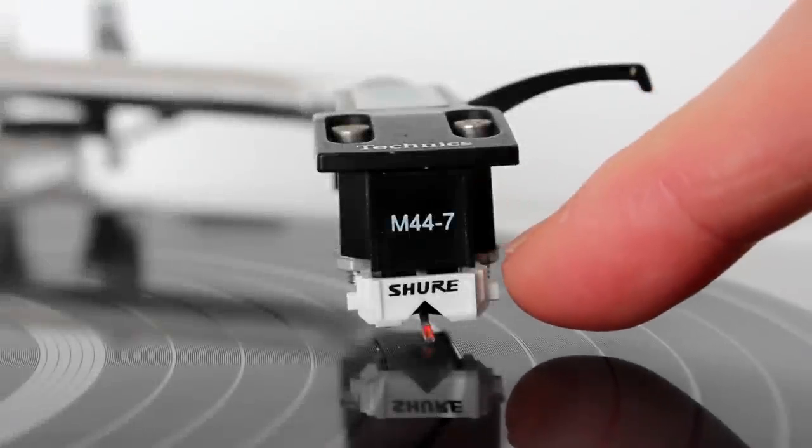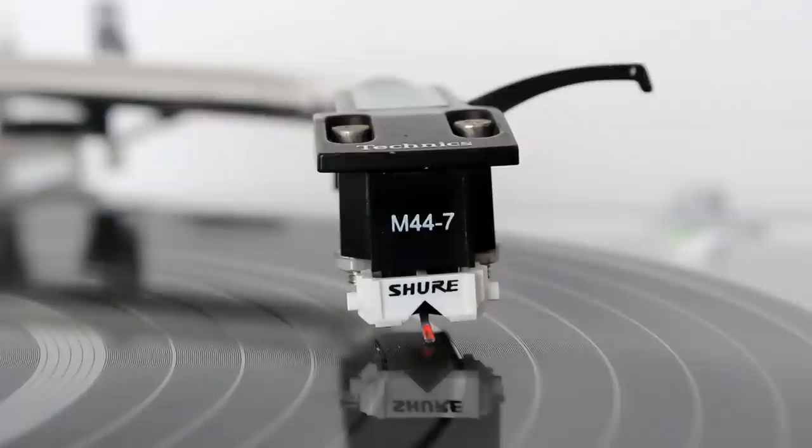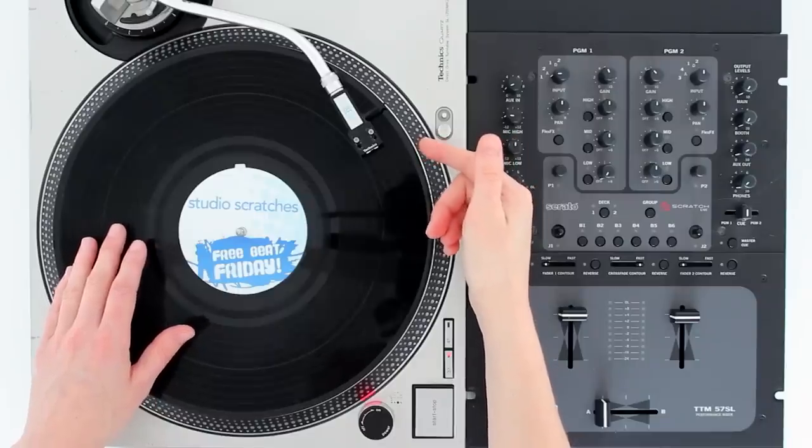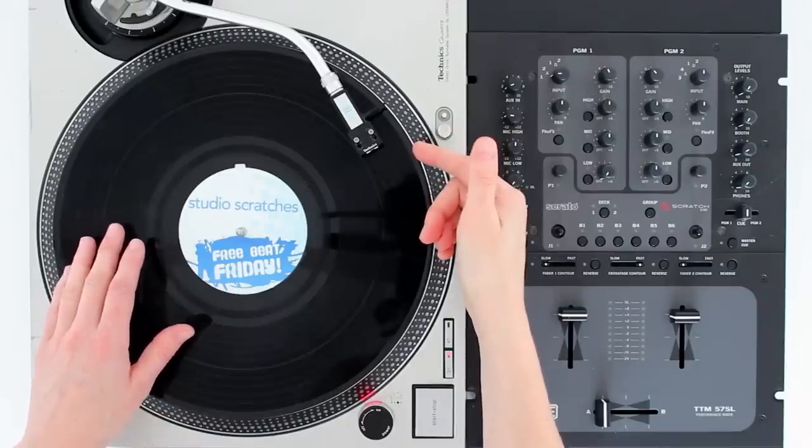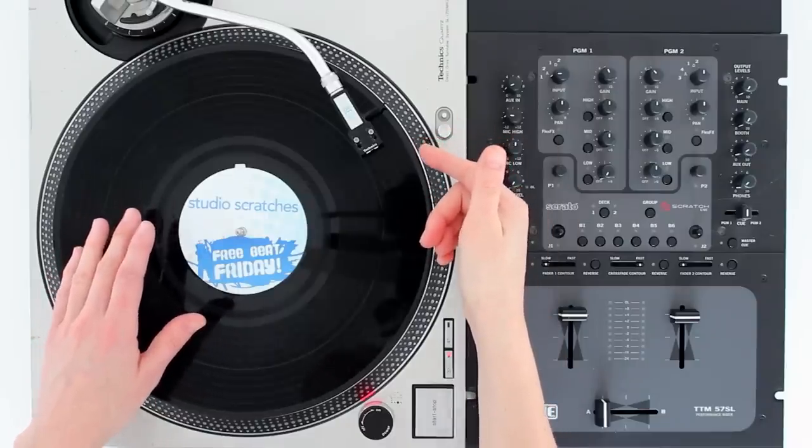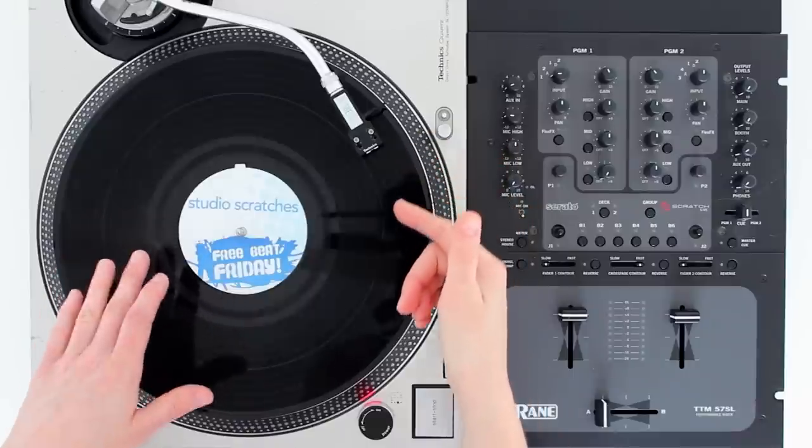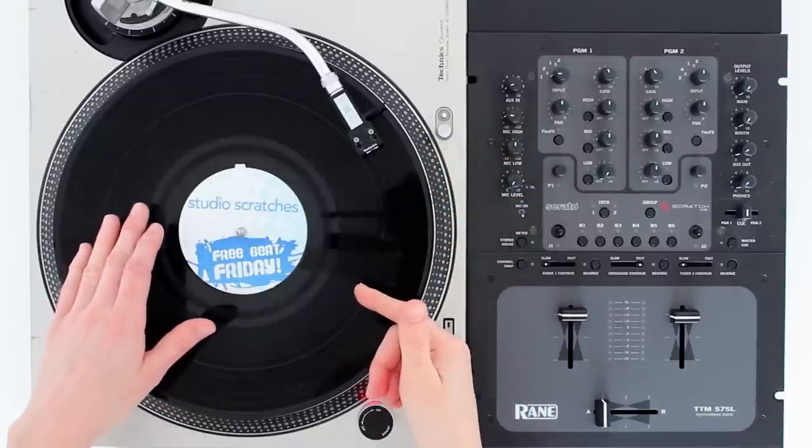The cartridge and stylus are the part that pick up the signal from the record and translate it into sound. You need a cartridge and stylus that are specifically designed for scratching and that don't skip when you move the record backwards and forwards at high speeds.